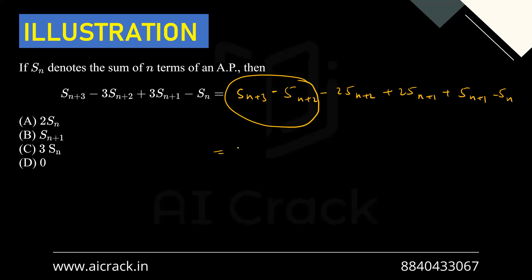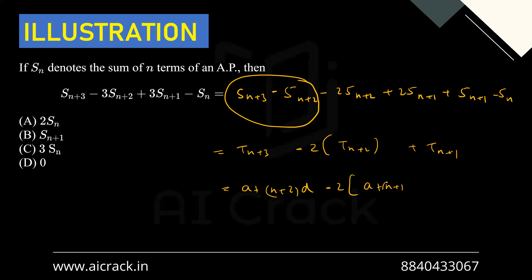Applying tn = Sn - Sn-1: the first pair gives tn+3, the second gives -2·tn+2, and the third gives tn+1. So the expression becomes tn+3 - 2tn+2 + tn+1 = [a+(n+2)d] - 2[a+(n+1)d] + [a+nd]. Expanding: the 'a' terms cancel (a - 2a + a = 0), the 'nd' terms cancel, and the constant d terms: 2d - 2d = 0. Everything cancels and the answer is 0.